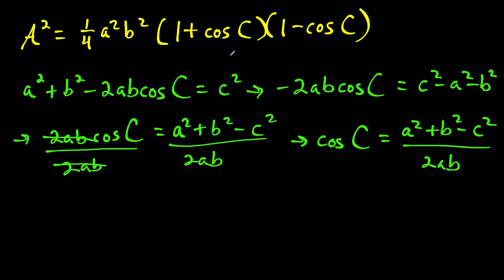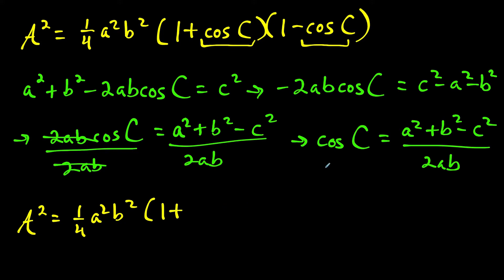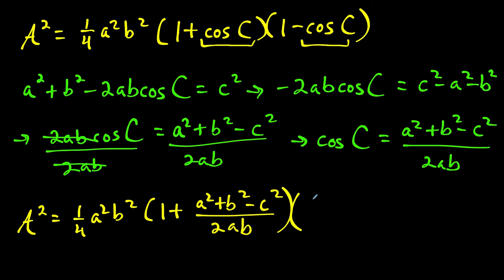Now we can replace cosine C with this new expression. So the area squared equals one fourth times A squared times B squared, times (one plus cosine C) where we replace cosine C with (A squared plus B squared minus C squared) over two AB, times (one minus cosine C), again replacing with (A squared plus B squared minus C squared) over two AB.